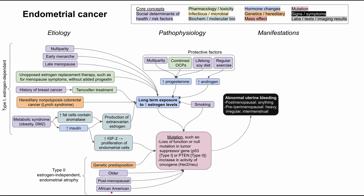Moving to manifestations, the key symptom is abnormal uterine bleeding, which is usually how endometrial cancer presents. It can occur in premenopausal, perimenopausal, or postmenopausal women. In postmenopausal women, any uterine bleeding — even spotting — is abnormal and should warrant investigation for endometrial cancer. In premenopausal or perimenopausal women, it can be trickier: unusually heavy periods, irregular periods, or intermenstrual bleeding can all be signs. However, distinguishing irregular periods from abnormal uterine bleeding is difficult around menopause, when periods naturally become irregular.